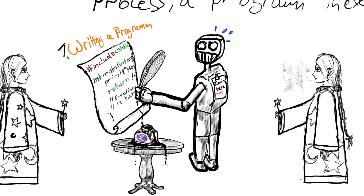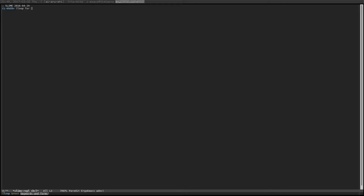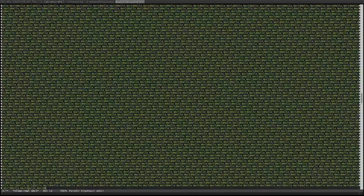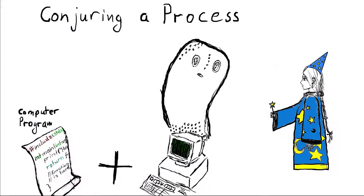By casting the magical incantation — that is, by executing, running the program — we conjure the spirit of the computer with our spells. A program in execution is called a process, and a process is a slave to the programmer's code. But in this video, we will show ways of how to bend the will of a summoned process to make it do our bidding.